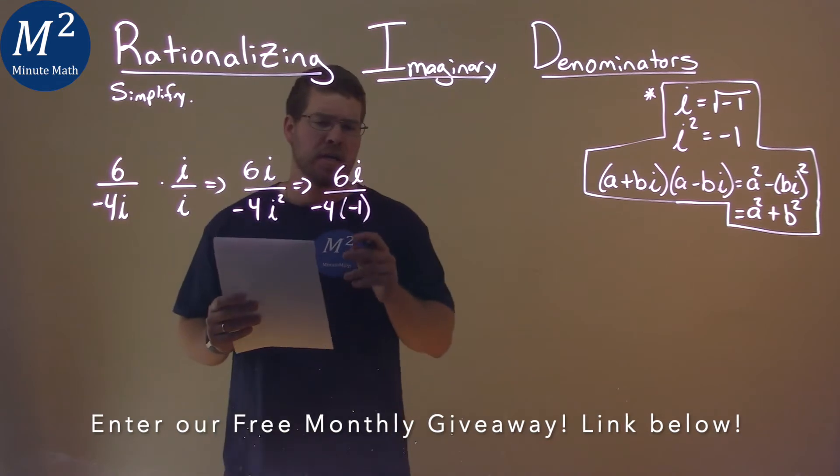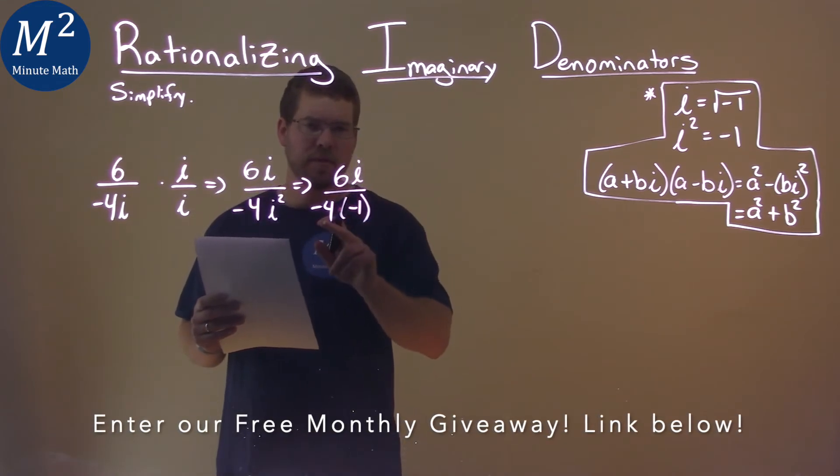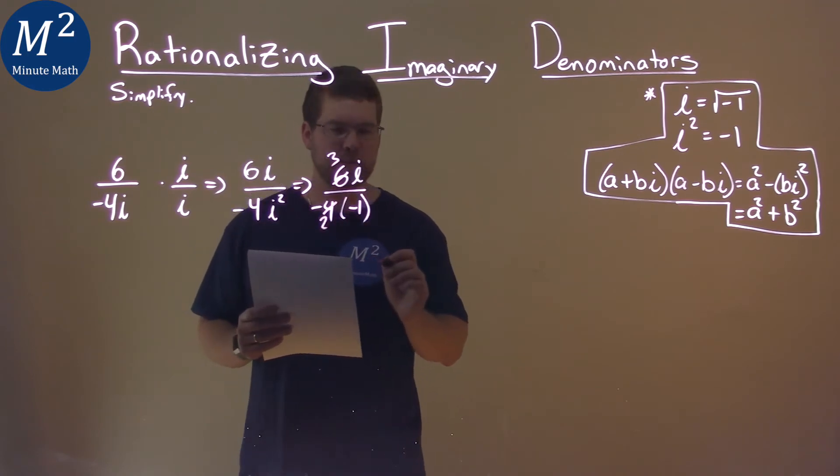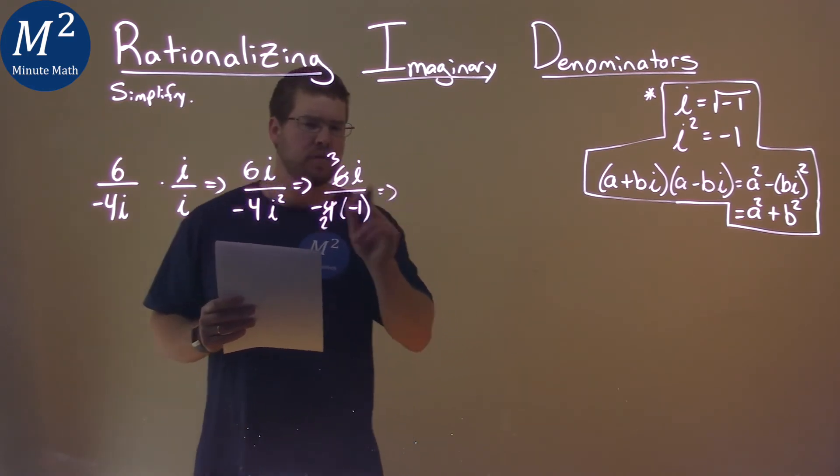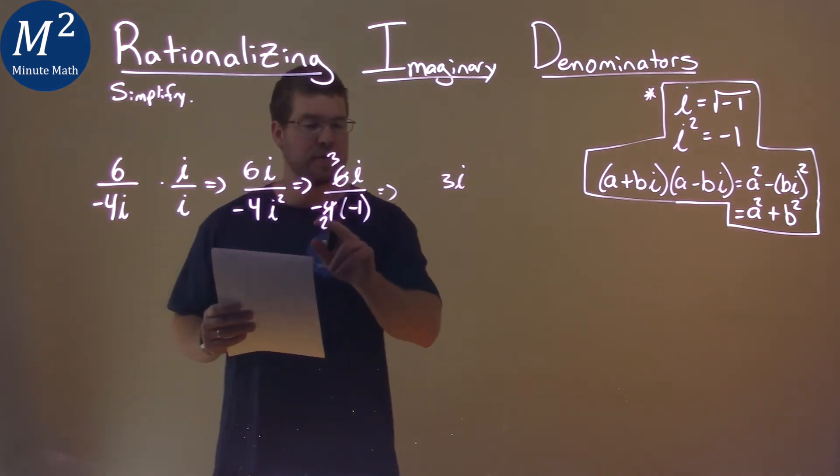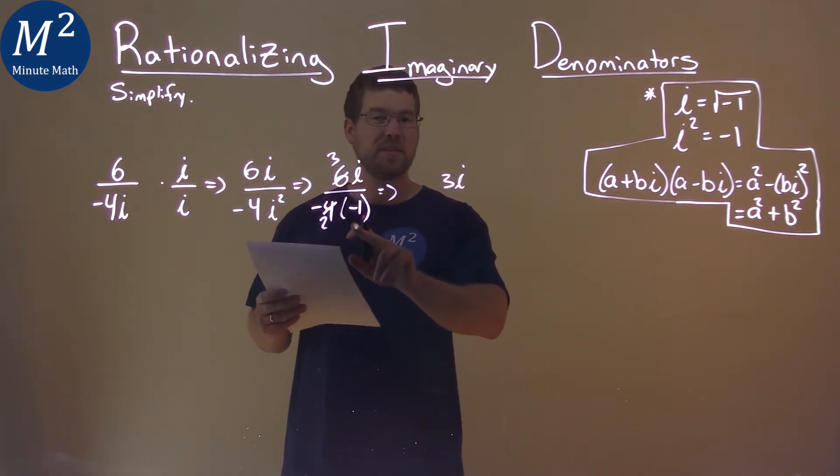Alright, let's break down what we can. 6 and 4 can simplify to be 3 halves, you divide both by 2. So 3i is in the numerator now, and the denominator is negative 2 times a negative 1, which is a positive 2.